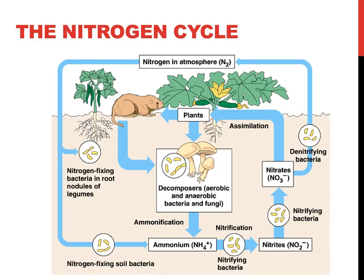The nitrogen cycle is the process by which nitrogen is added or removed from the atmosphere. This process, which you're probably less familiar with than the previous two cycles, is very important for organisms such as fish and plants. Nitrogen levels in the water — in nitrates, nitrites, and ammonia — can be lethal to fish. This can be one of the major causes of death of fish in fish tanks.